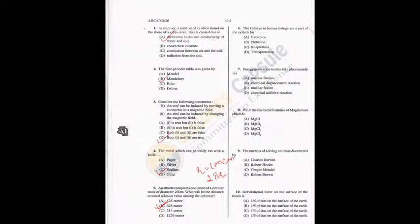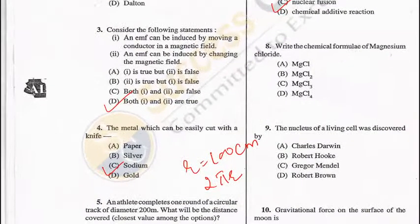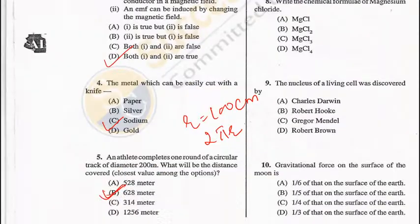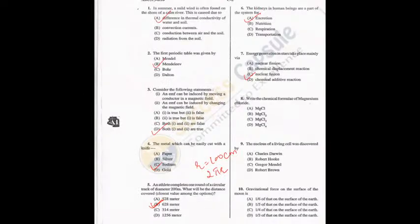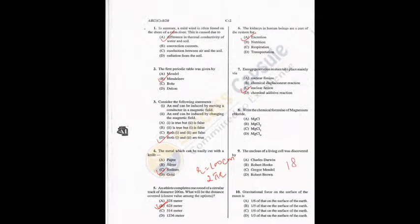Question 8: Write the chemical formula of magnesium chloride — the answer is B: MgCl₂. Question 9: The nucleus of a living cell was discovered by Robert Brown in 1831. So D is the answer.